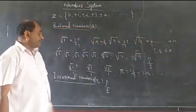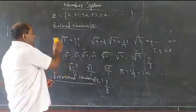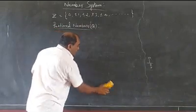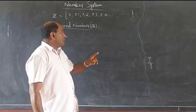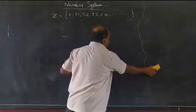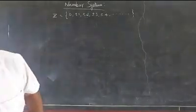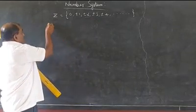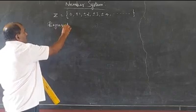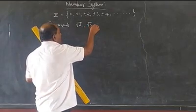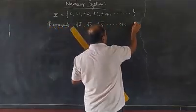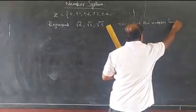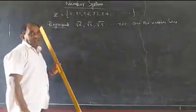Pi goes up to infinity in its decimal expansion. So we can have many, many irrational numbers. Now the question is: how to represent irrational numbers on the number line? For example, how do we locate square root of 2 on the number line? That is the next point we will discuss.